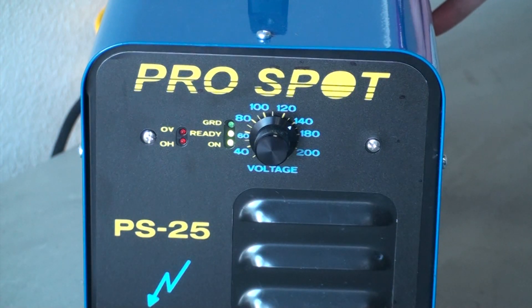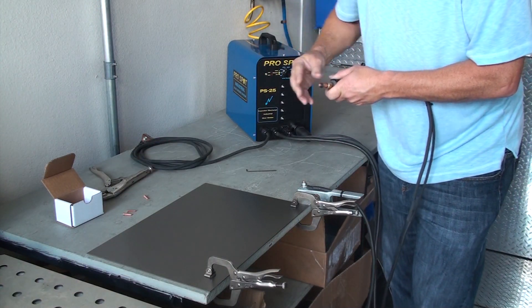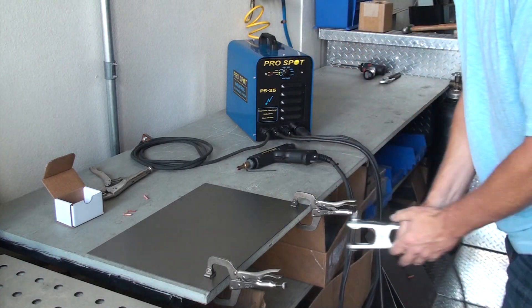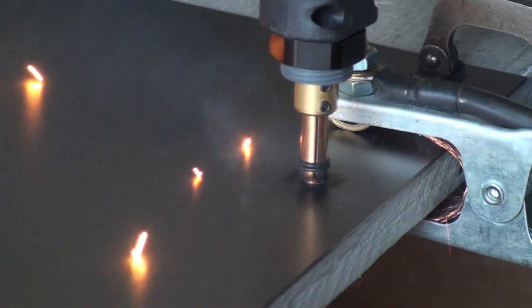The PS25 is a highly capable, solid-state capacitor discharge stud welding system that is designed to handle studs up to a quarter inch in diameter. The system consists of the power control unit, ground cables, and stud welding gun.